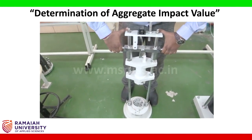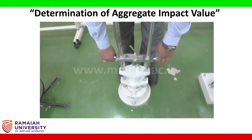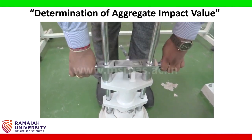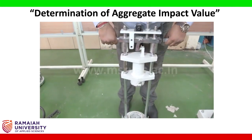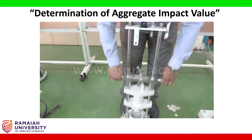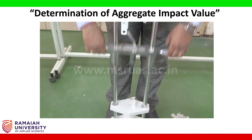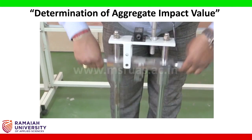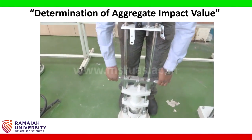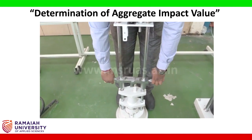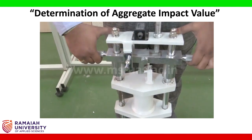Each drop of the hammer counts as one impact. We are supposed to give 15 impacts to the aggregate. We have now given 15 blows. We are going to lock the equipment.